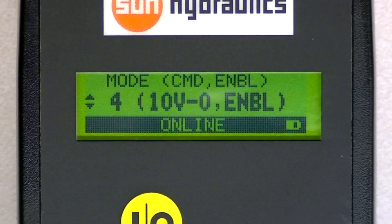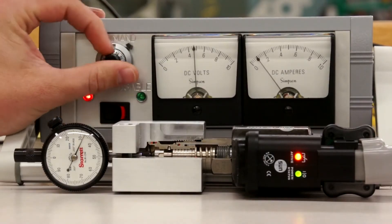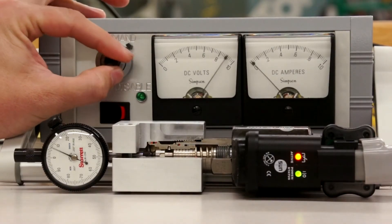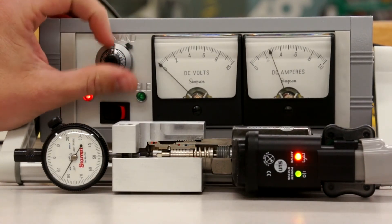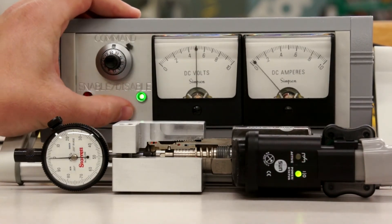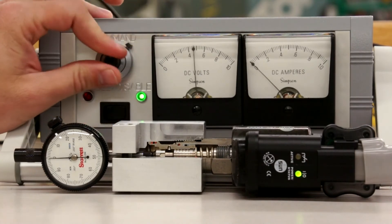Mode 4 is the same as mode 3, except it is inversed. So as we sweep the input from 0 to 10 volts, 10 volts will give us our minimum output, and 0 volts will give us our maximum output. If the enable is turned off, you will disable the output.